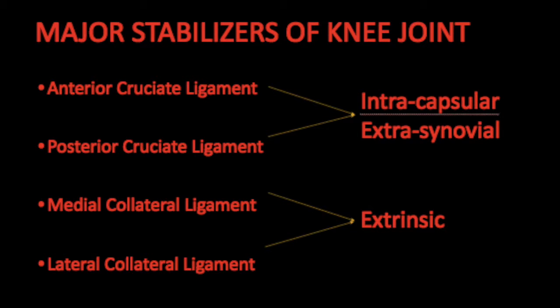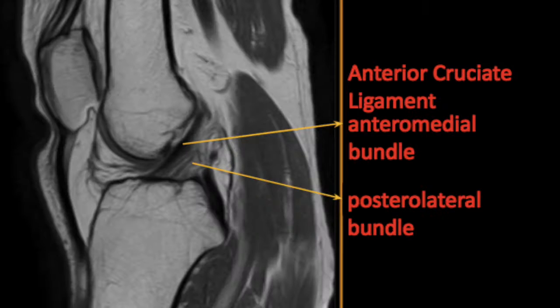Ligaments of the knee. There are four basic ligaments which are the major stabilizers of the knee joint. Two of them are intracapsular and extrasynovial, known as the cruciate ligaments — one anterior and one posterior. Two of them, called the collateral ligaments, are extrinsic ligaments — the medial and the lateral collateral ligaments. Coming to each of them one by one.